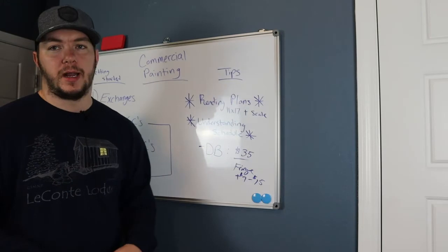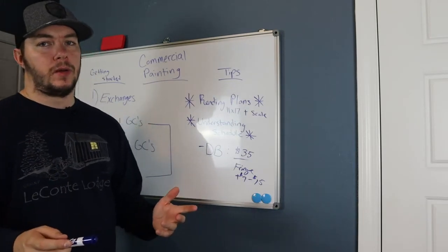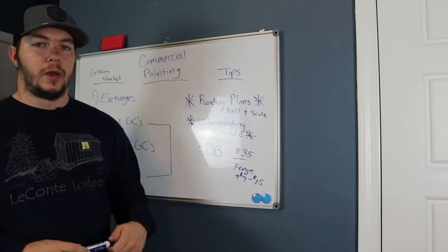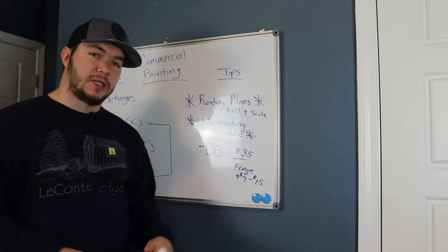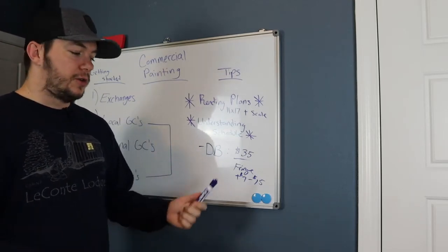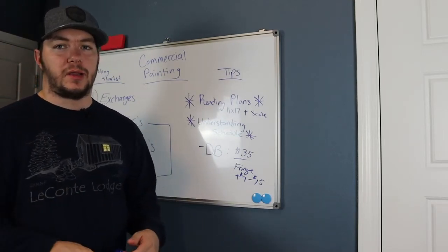But anything that's not in writing, just remember, talk with the general contractor about it. Change orders are a big part of commercial construction. Anything that's not specified, make sure you put everything in writing. And if you do any extra work, make sure you keep track of it because you're going to have to get paid for it at the end.